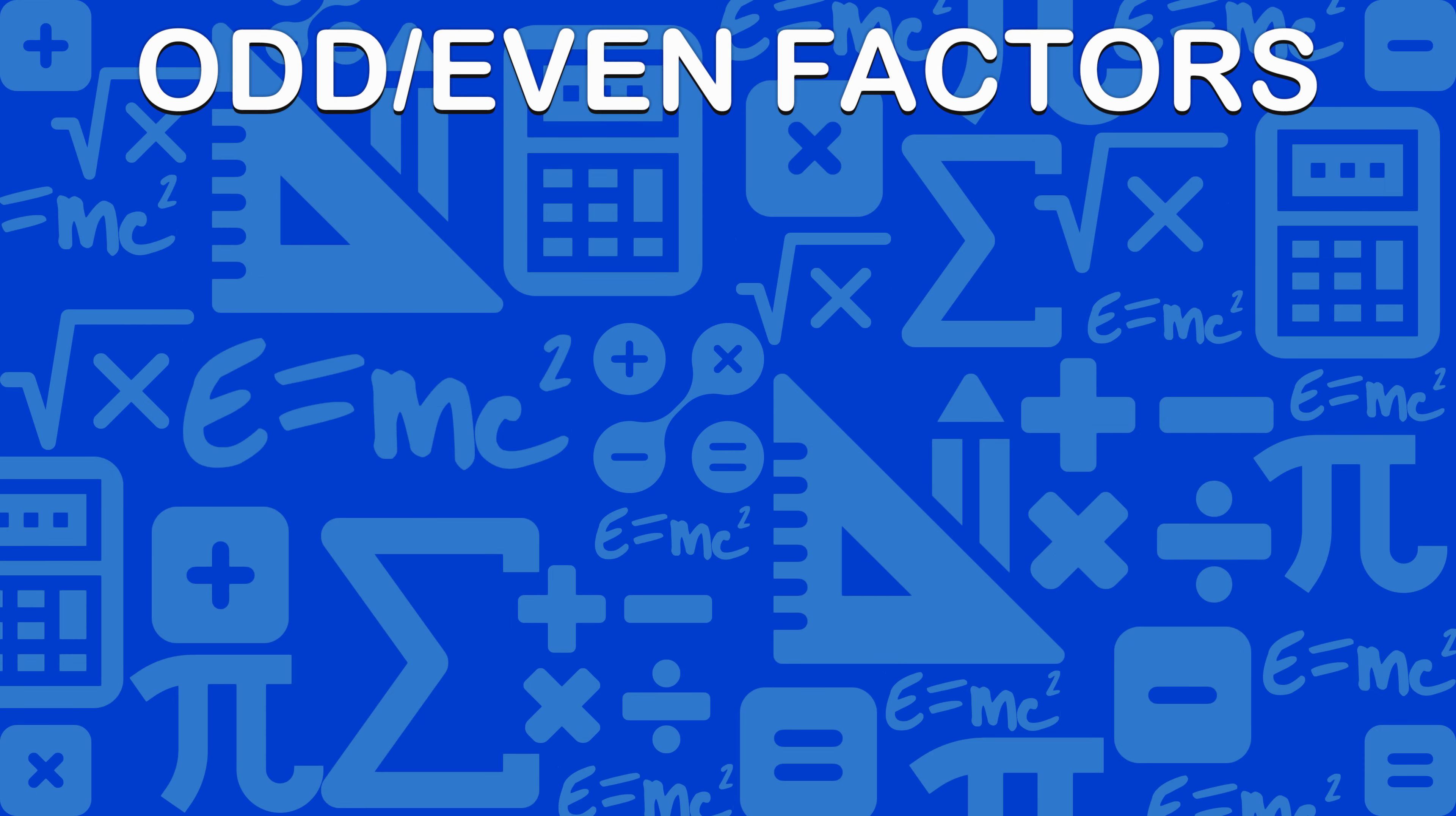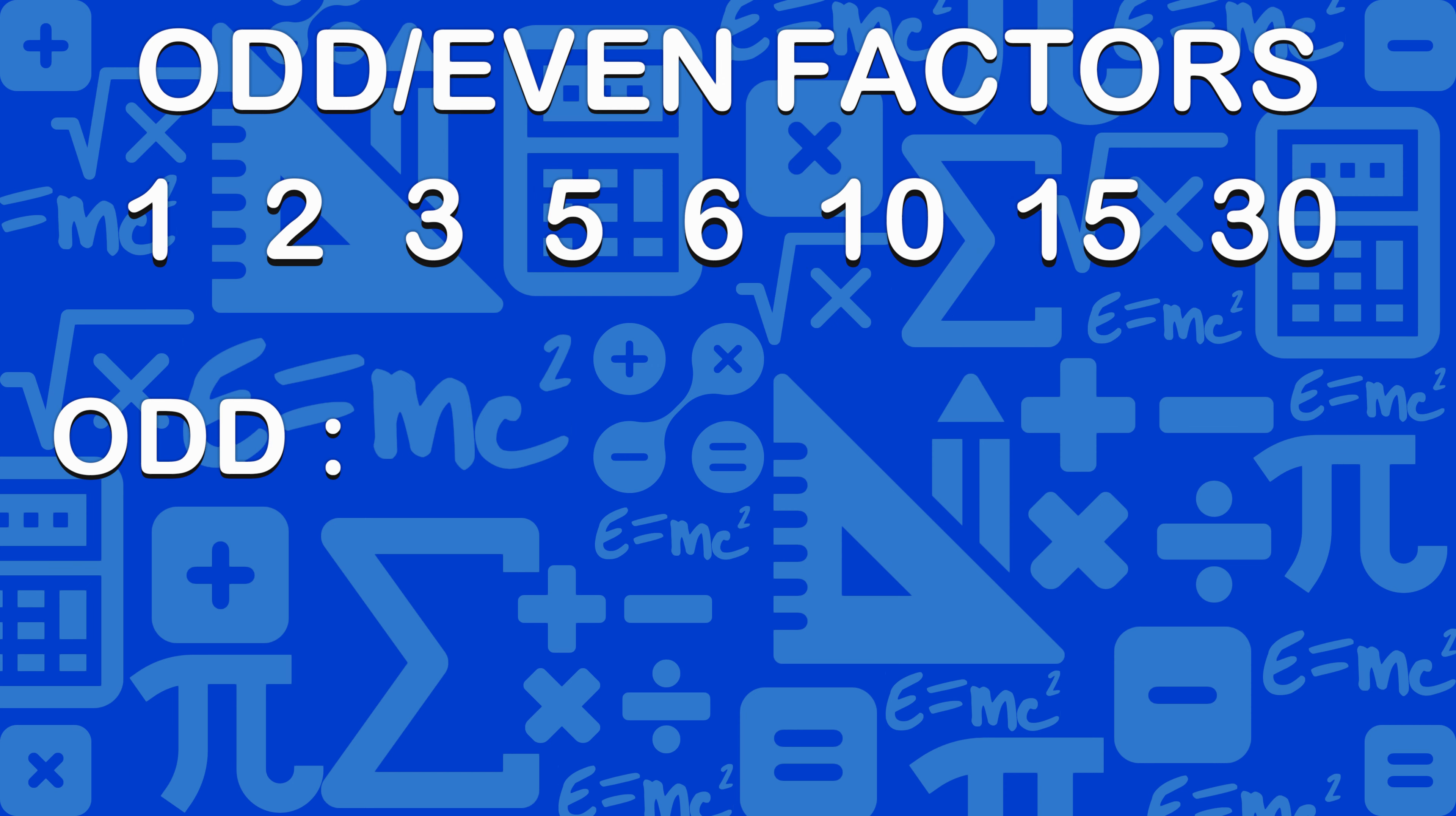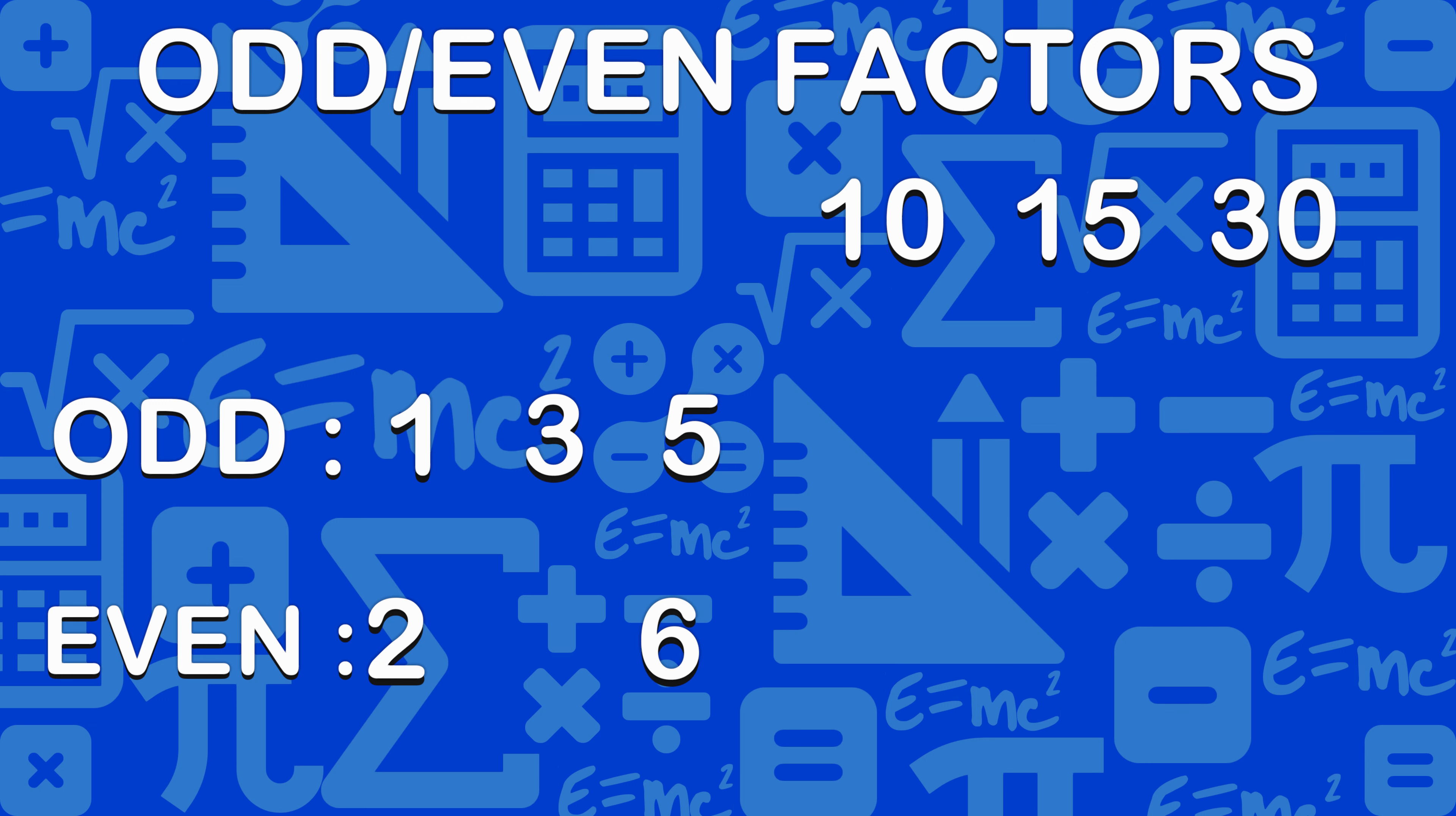Let's have a look at odd and even factors. Odd factors: 1, 3, 5, 15. Even factors: 2, 6, 10, 30.